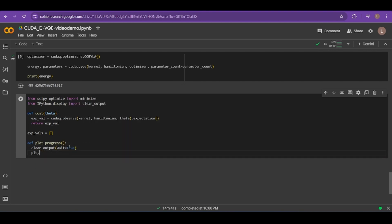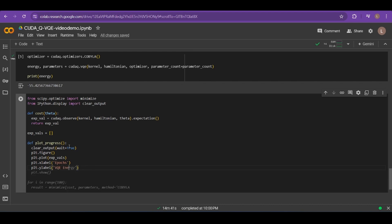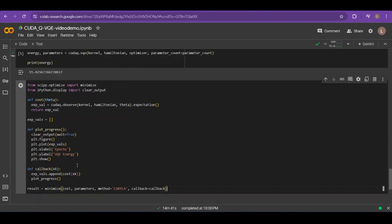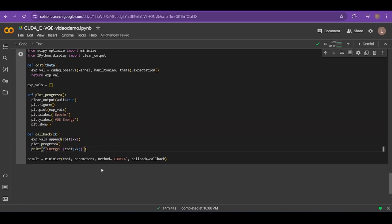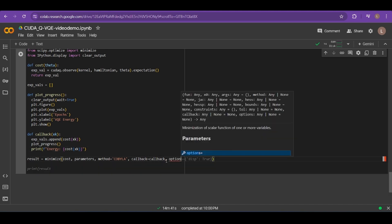Next, we'll define a plotting function. This function just updates a plot with the last result from our simulation. Finally, we need a callback function. This function calls our plotting function and prints out the energy at each step.